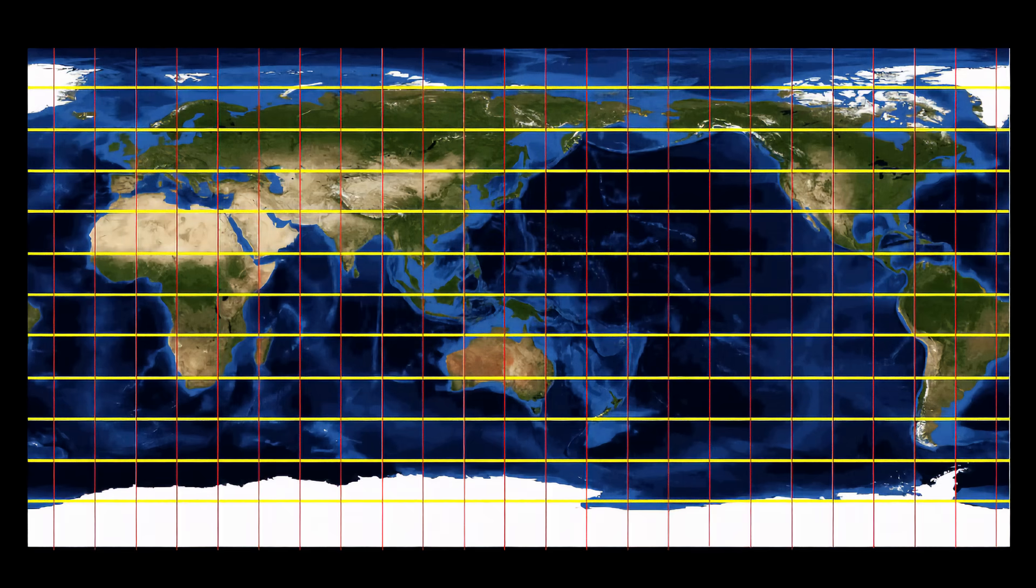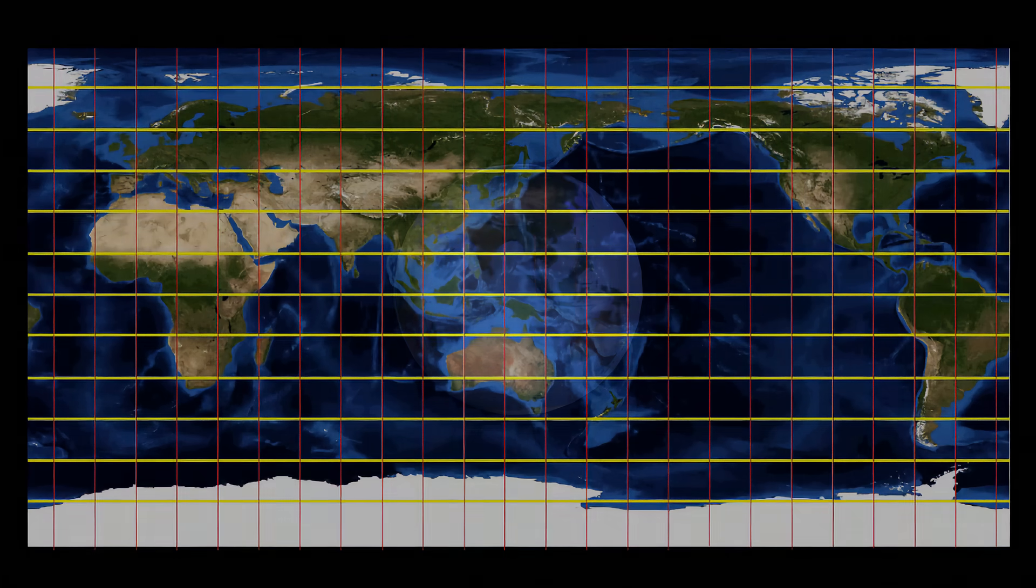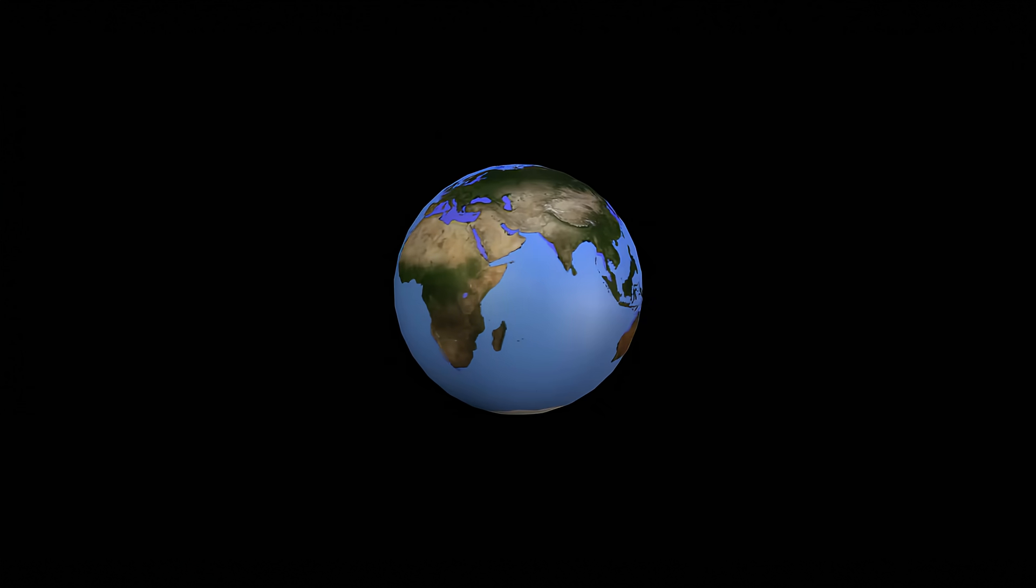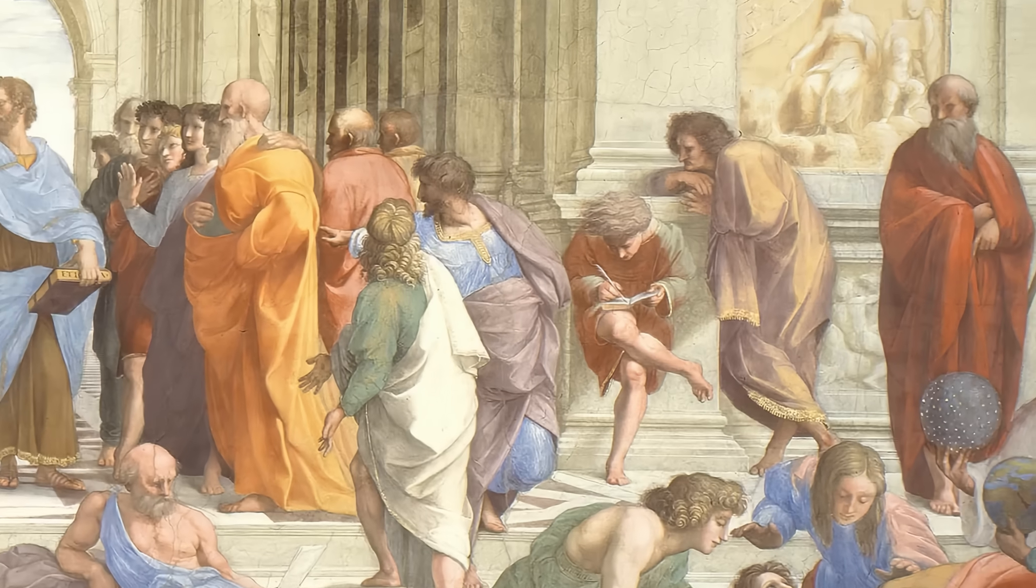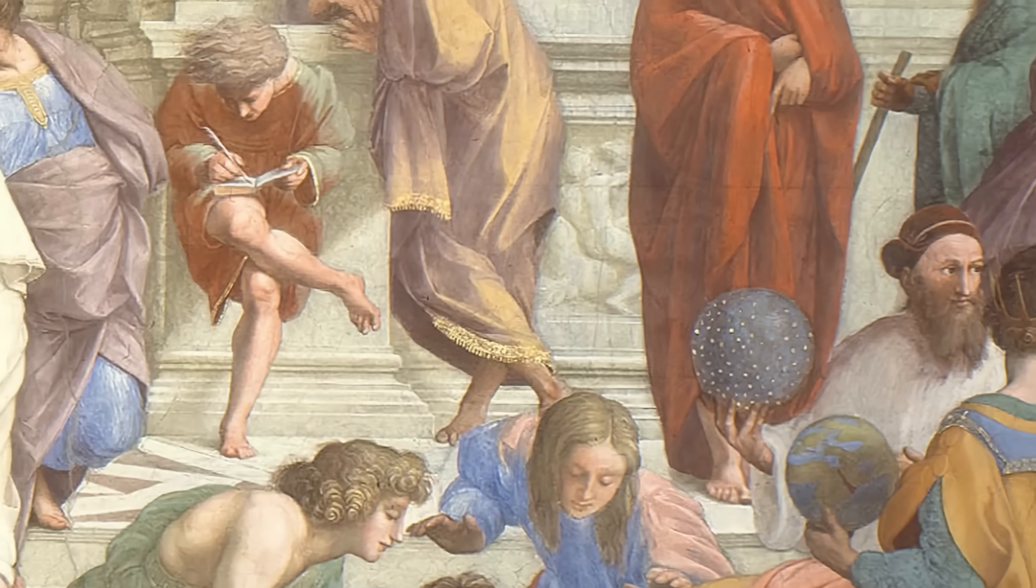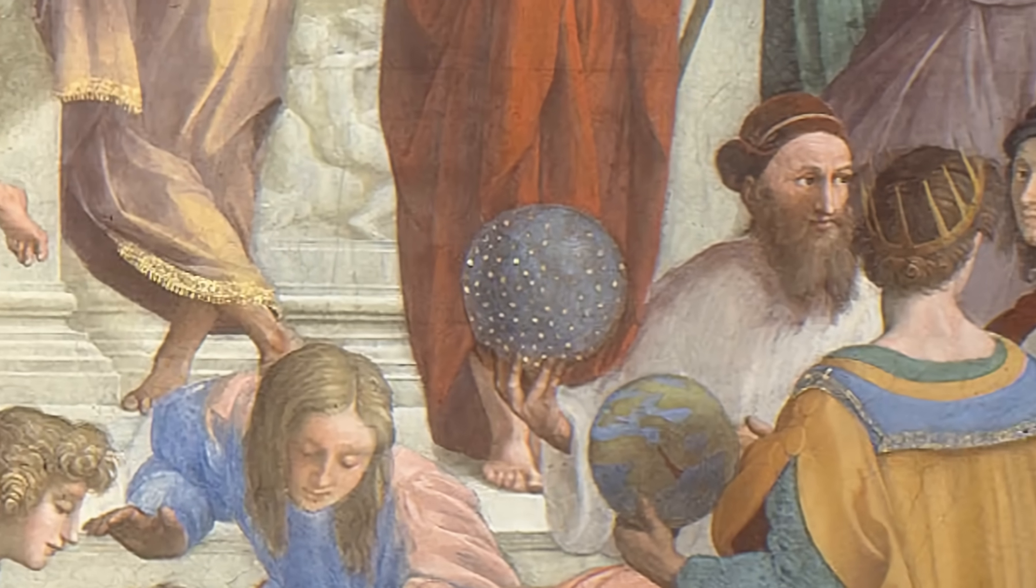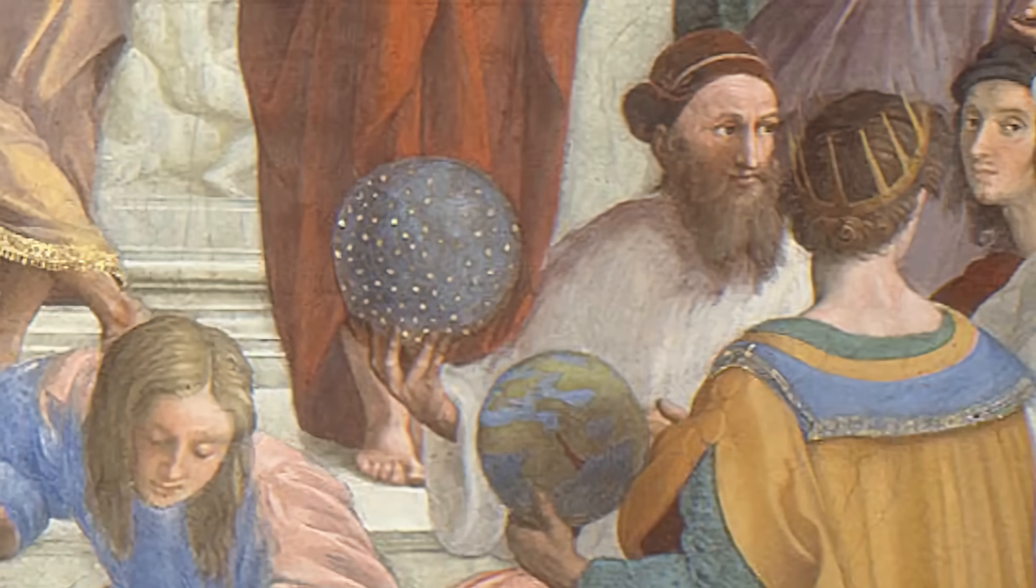You are probably familiar with latitude and longitude, the coordinate system used to define locations on the surface of the Earth. This system has ancient roots. It appears the early Greeks were the first to propose a global coordinate system. Their system evolved over thousands of years into the one we use today.